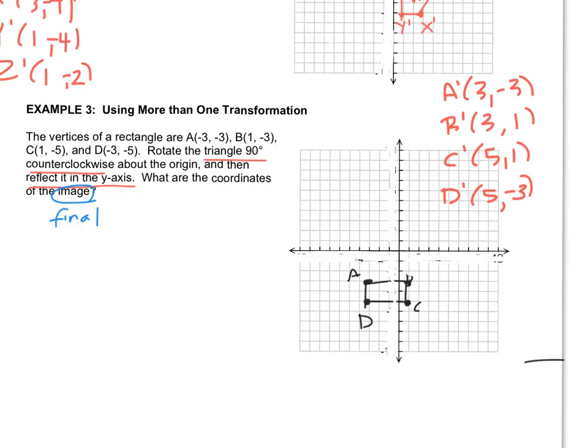Let's plot those points. A prime is at 3, negative 3. B prime is at 3, 1. C prime is at 5, 1. And D prime is at 5, negative 3. So there's the rotated rectangle.